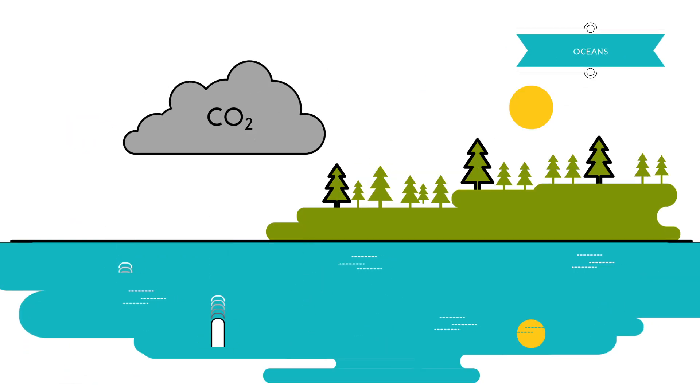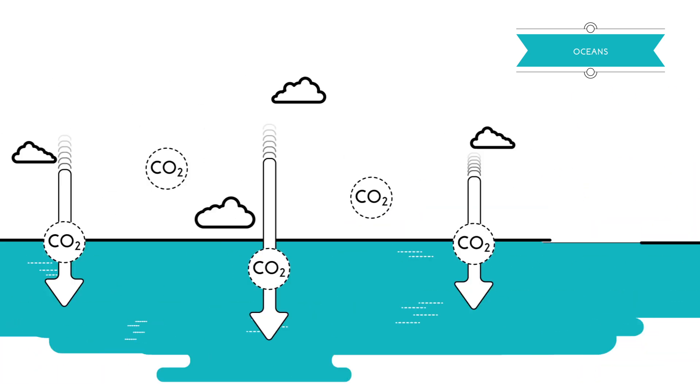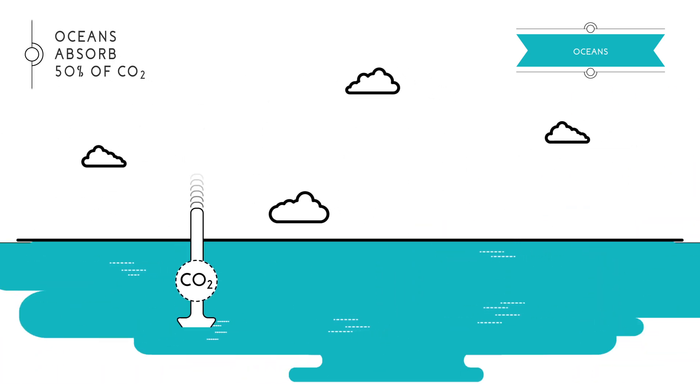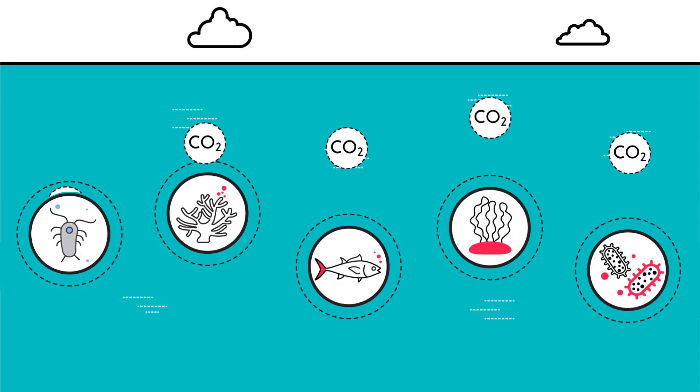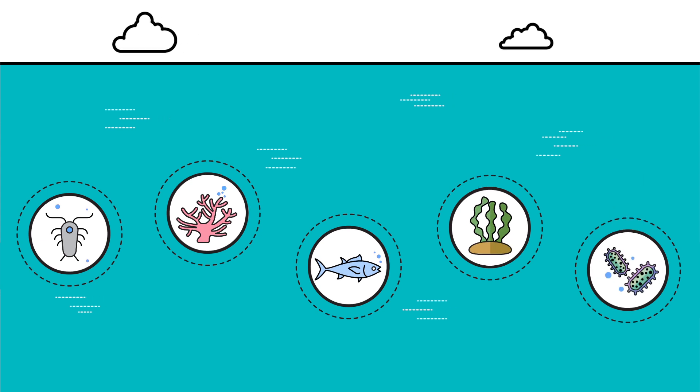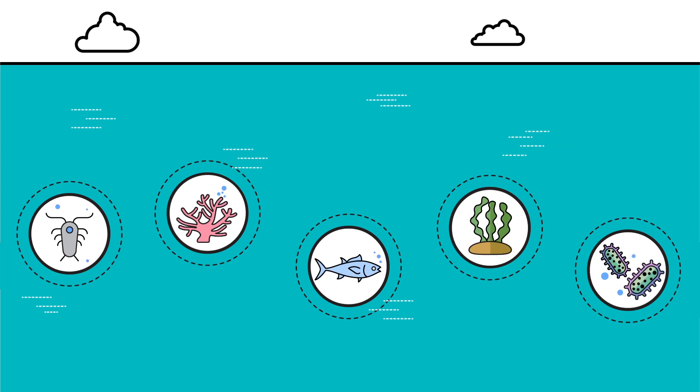Oceans are considered the main natural carbon sinks as they are capable of absorbing about 50% of the carbon emitted into the atmosphere. In particular, plankton, corals, fish, algae and other photosynthetic bacteria are responsible for this capture.